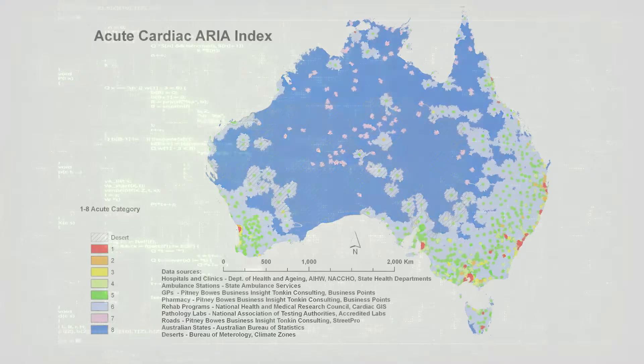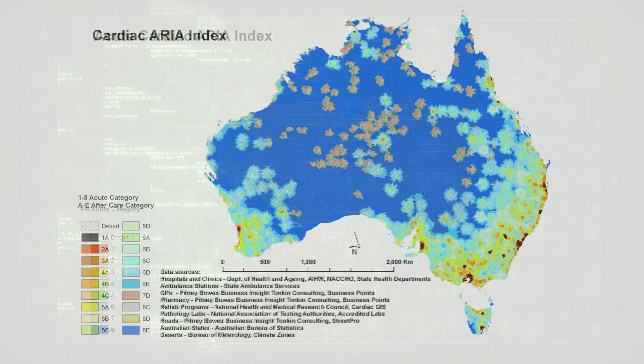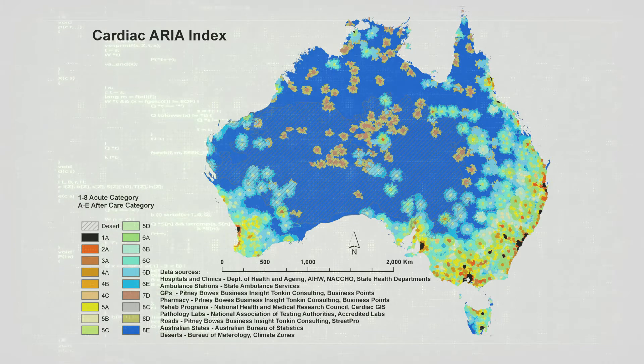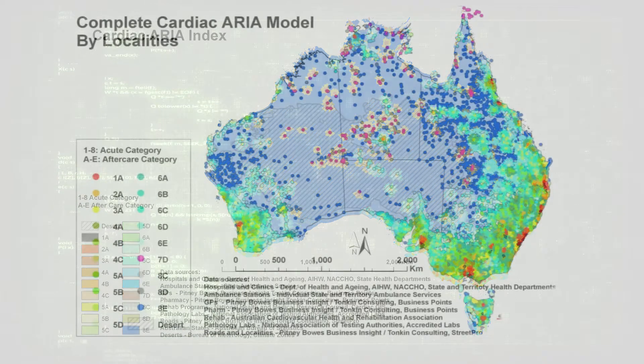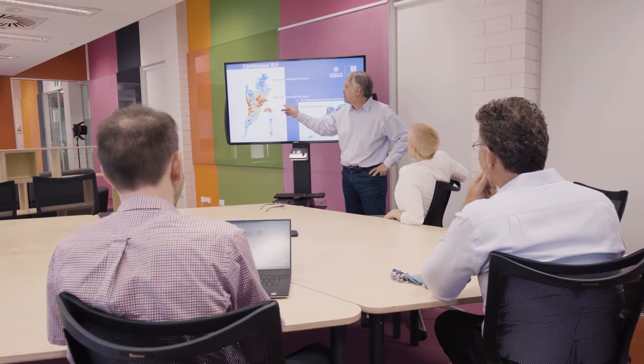An example of how geospatial has been used in health research is Cardiac ARIA. It's an accessibility model that looks at how the population can access acute or emergency cardiac facilities and post-cardiac facilities on discharge from hospital. The fundamental was to see whether people would have that one-hour access to some form of cardiac service. What we were able to show is that there were many parts of remote and rural Australia that had much poorer access to services and less service delivery.